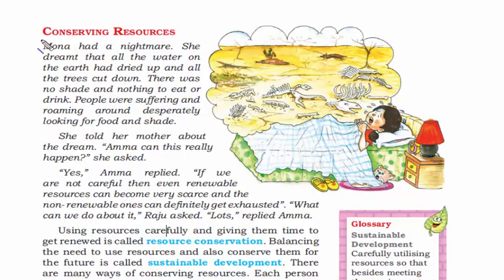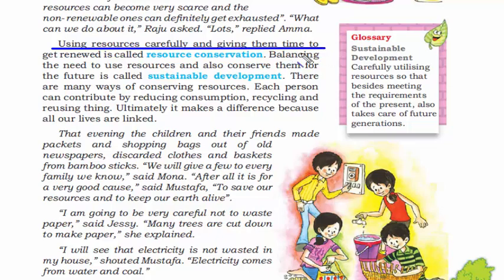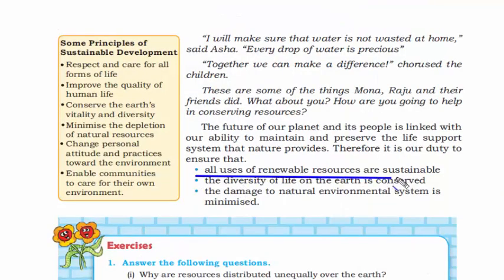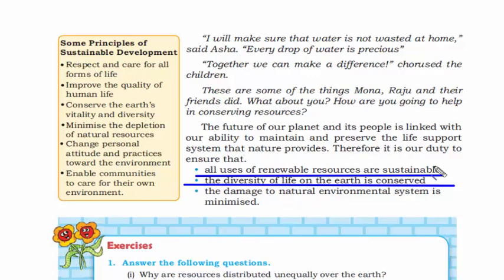After reading about various types of resources, let's move on to conserving resources. Using resources carefully and giving them time to get renewed is called resource conservation. Balancing the need to use resources while also conserving them for the future is called sustainable development. Sustainable development depends on resource conservation. Some ways of conserving resources include recycling and reusing things, using renewable resources, protecting endangered species, causing minimal damage to the natural environment, reducing cutting of trees, and preventing soil erosion.